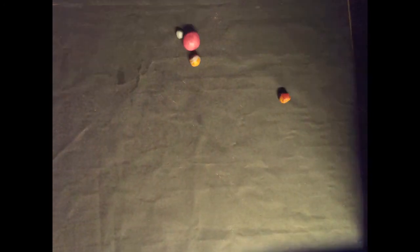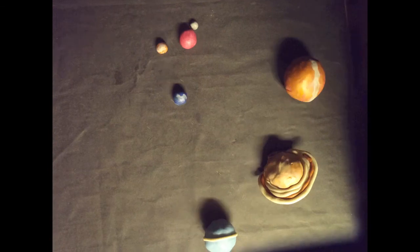Eventually, we have the four Jovian planets: Jupiter, Saturn, Uranus, and Neptune.